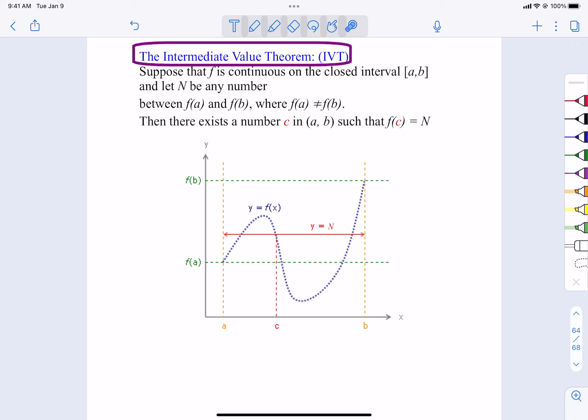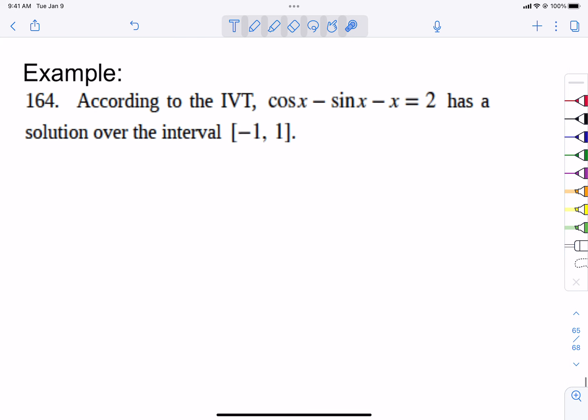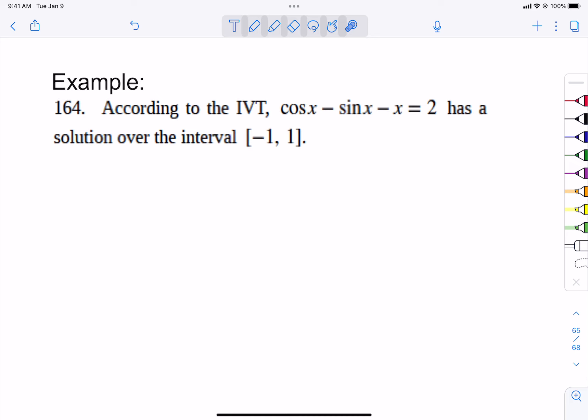And I usually will abbreviate it IVT, so if you see that abbreviation, that's kind of what it stands for. So it says, according to the Intermediate Value Theorem, cosine x minus sine x minus x equals 2 has a solution over the interval from negative 1 to 1, show that.